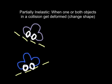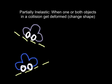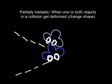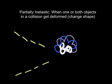The last type of collision that we want to talk about is the partially inelastic collision, which is when one or both objects in a collision get deformed. So let's say again we have a collision, an automobile accident. And so these ones collide, but during this collision...